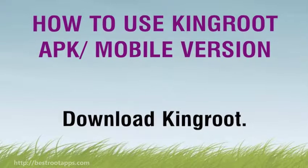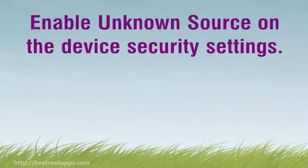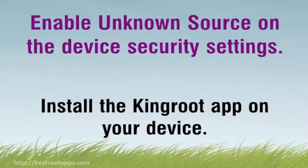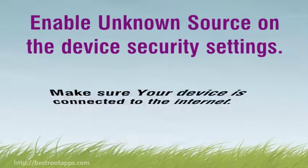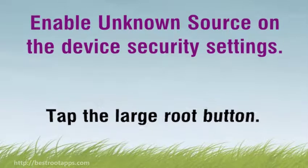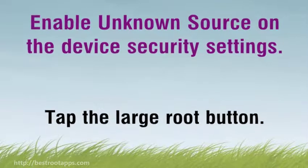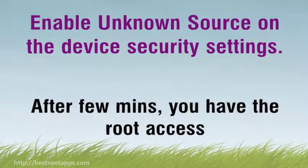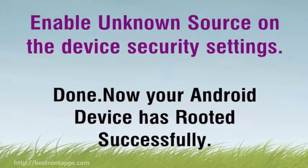How to root your Android device with Kingroot APK: Download Kingroot, enable unknown sources in the device security settings, and install the Kingroot app on your device. Make sure your device is connected to the internet, then tap the large root button. After a few minutes, you will have root access. Your Android device has been rooted successfully.